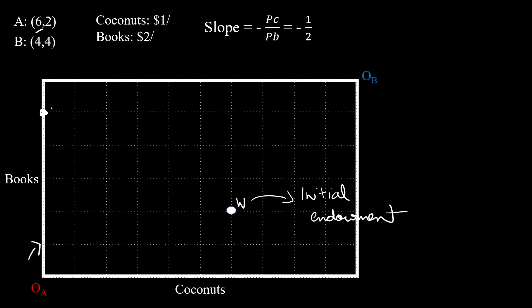For the x-intercept, A will have to sell all of his books, which will bring him at 10 coconuts and zero books, which will be this point. So that will be our budget line.